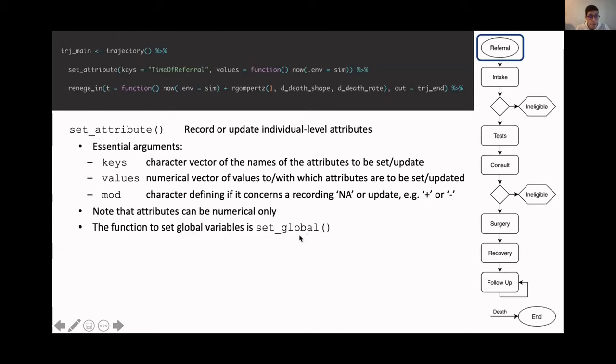If you specify the mod argument, which we'll show in a little bit more detail later, you can also update the value. If you leave that on an NA, you sort of set the value. But if you add a mode of updating it like plus or minus, you actually can update an existing value. And that also gives a hint that all the attributes need to be numericals. So there is no characters. The names are characters, but the values are numericals. And you can also set global variables that are accessible by all individuals using the set global function.